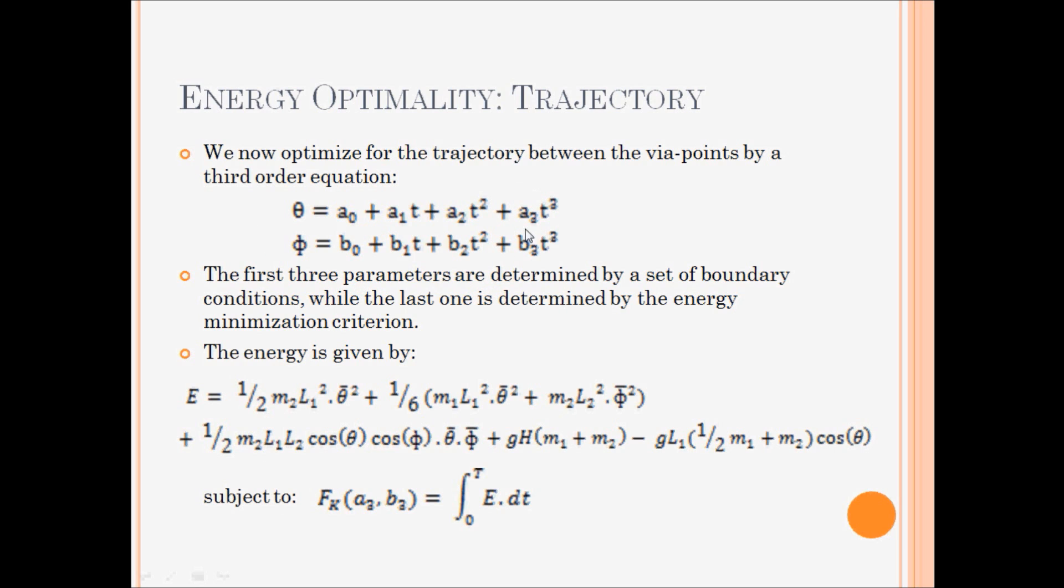The final parameters of a3 and b3 are determined from this equation, which is the integration of the energy given by this equation over a time interval. This integration is done with Simpson's rule. And we have a function in a3 and b3. And by minimizing this function, we can generate the whole trajectory.